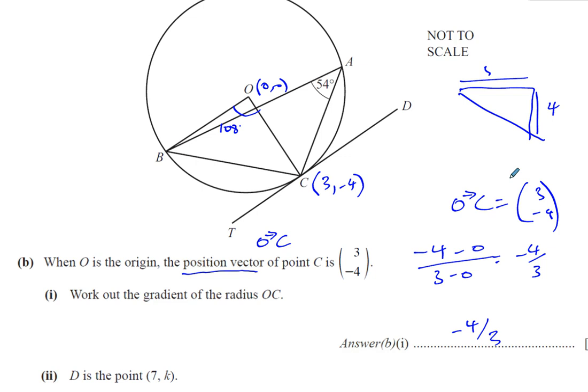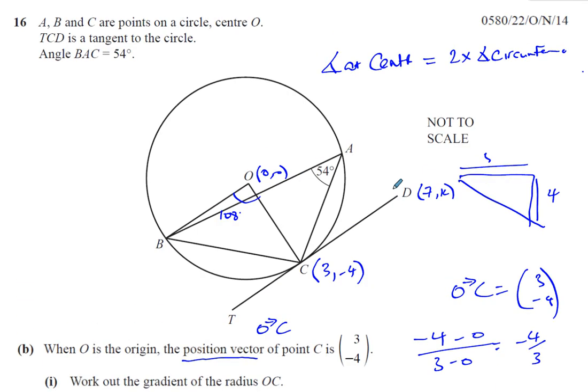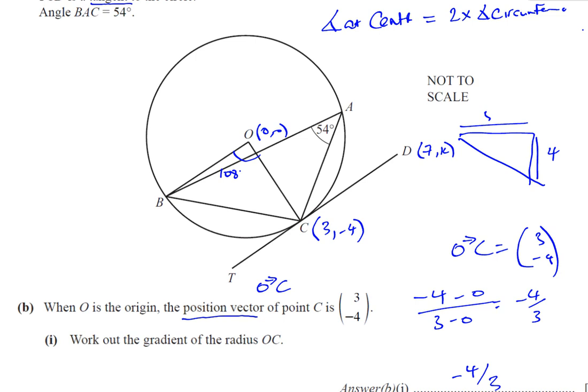Part 2 says D is the point (7, k). It tells us to find the value of k. How am I going to do that? Well, we know from this question it tells you TCD is a tangent to the circle. Why do they tell us that? Obviously it's got something to do with the question. It wasn't part A, we didn't need it for part A.